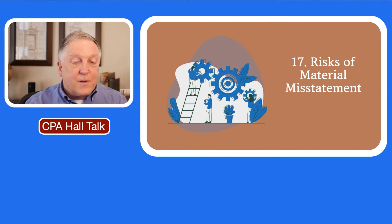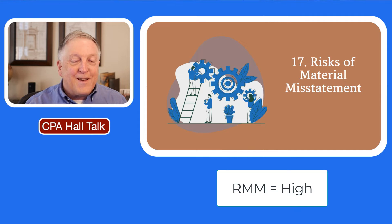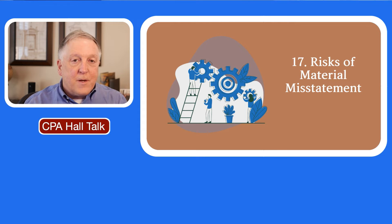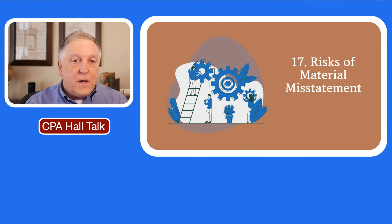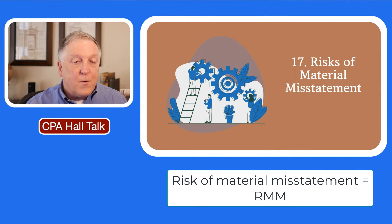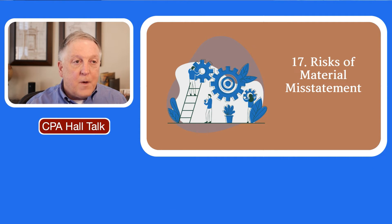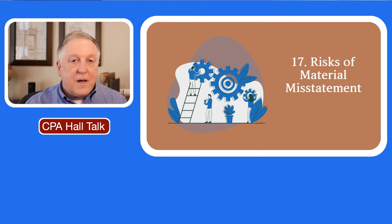When you have a high inherent risk and a high control risk, the risk of material misstatement is high — that's easy. It's when one of those elements is different from the other that it gets a little more complicated. So if you have a low inherent risk and a high control risk, is the risk of material misstatement — what we refer to as the RMM — moderate, low, or high?